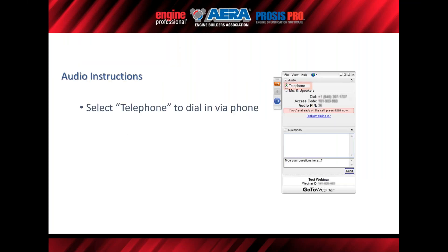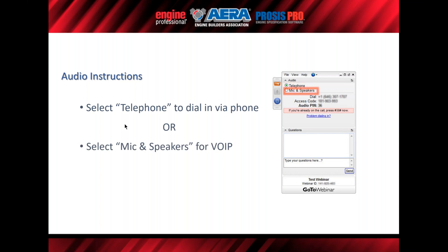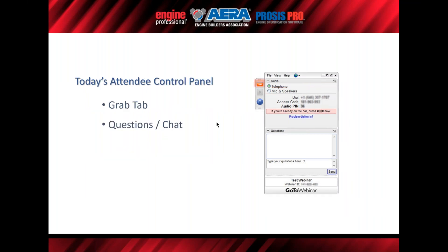A couple quick housekeeping slides. There are a couple different ways into today's webinar. One is via the telephone — please make sure you enter the access code and audio PIN to ensure there's no background noise during the presentation and keeps everybody muted. The second option is to listen in with your computer's mic and speakers. That little orangish box with the arrow in it is your grab tab — you can use that to collapse and expand your control panel at any time, allowing you to get it out of the way while you're watching the presentation.